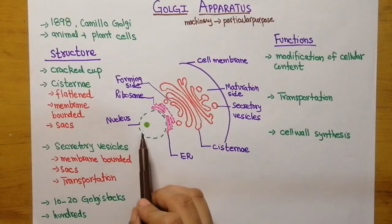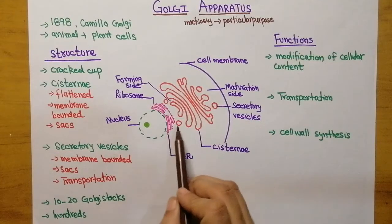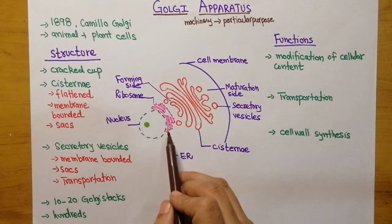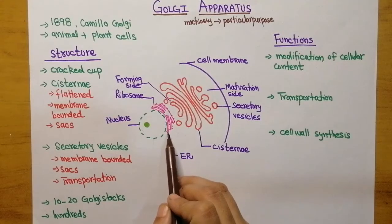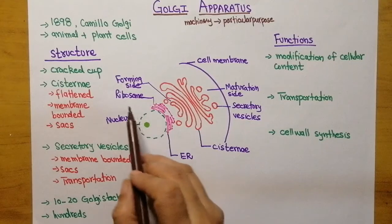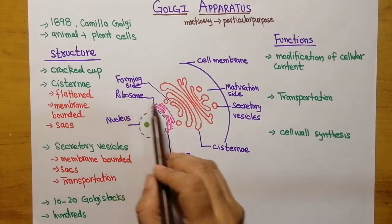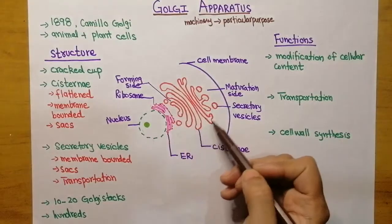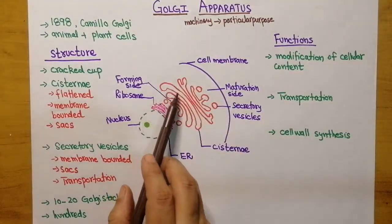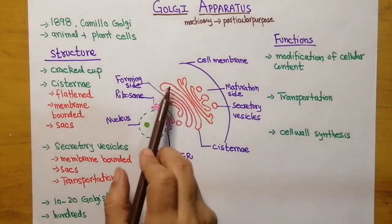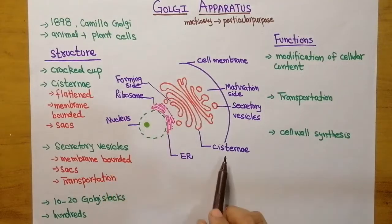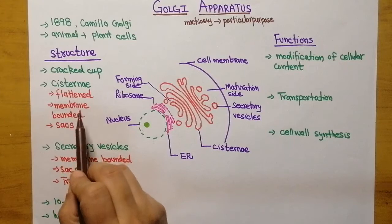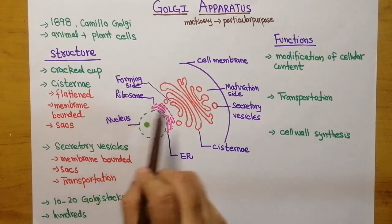Here in this diagram we have the nucleus, and to the nucleus the rough endoplasmic reticulum is attached. The rough endoplasmic reticulum contains ribosomes, and just beside that, this Golgi apparatus is present. This structure here is the cisternae.